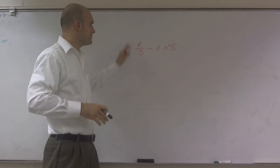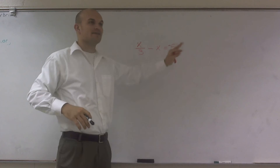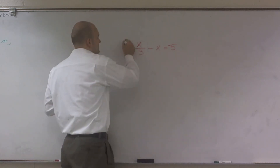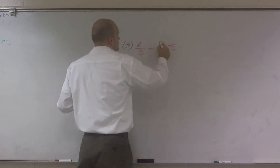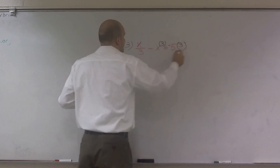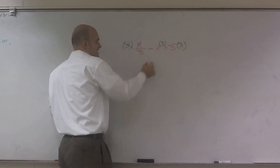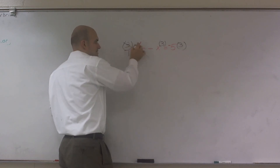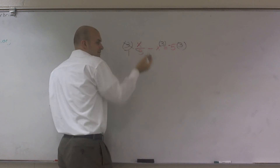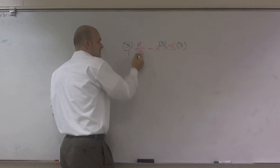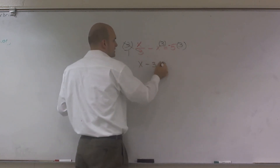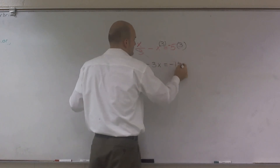So what I would do is just multiply everything by 3. Because if I multiply every term by 3, these 3's cancel out — 3 times x divided by 1 times 3, the 3's give 3 divided by 3 which is 1. So I'm left with x minus x times 3, which is 3x, equals negative 15.